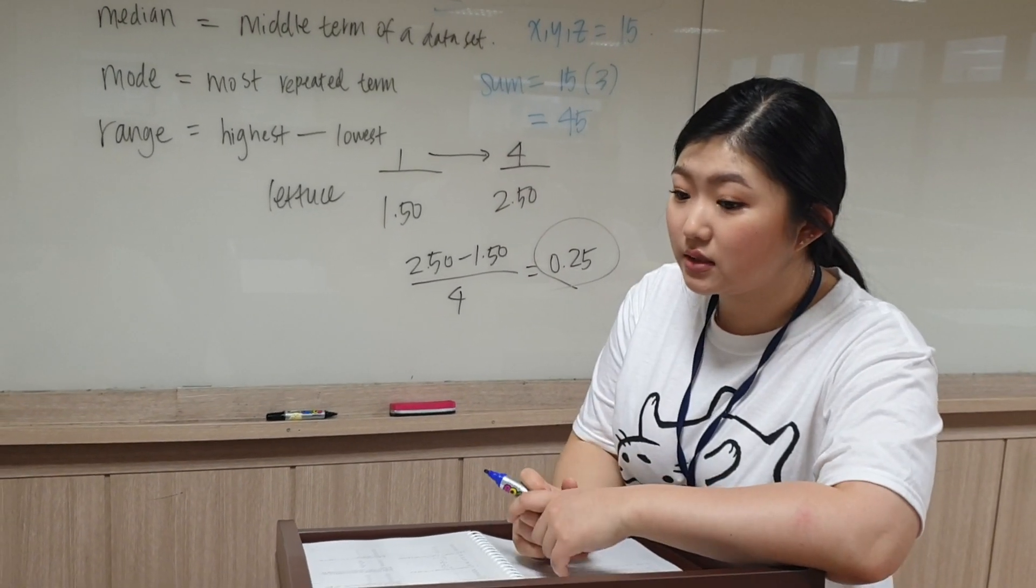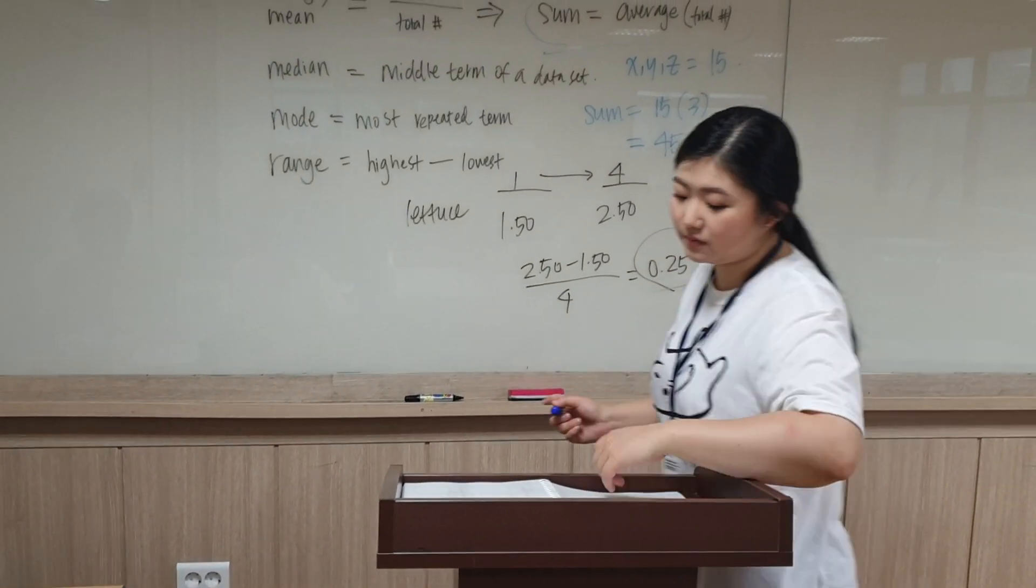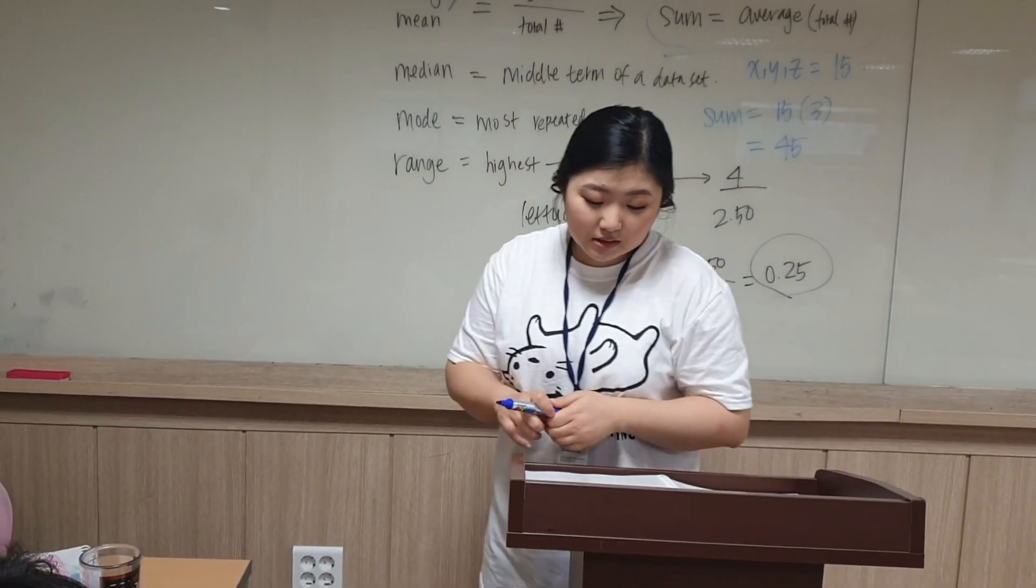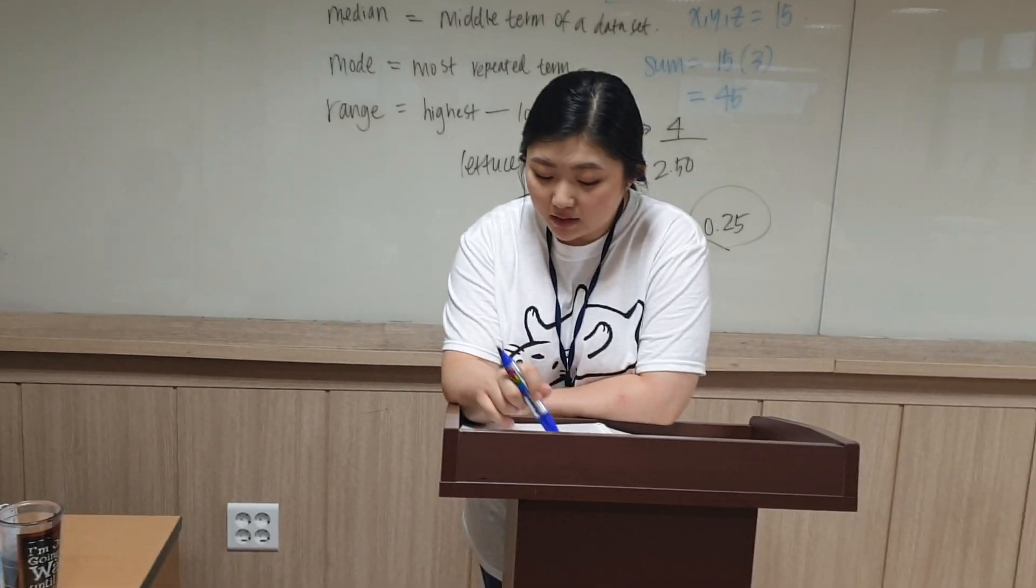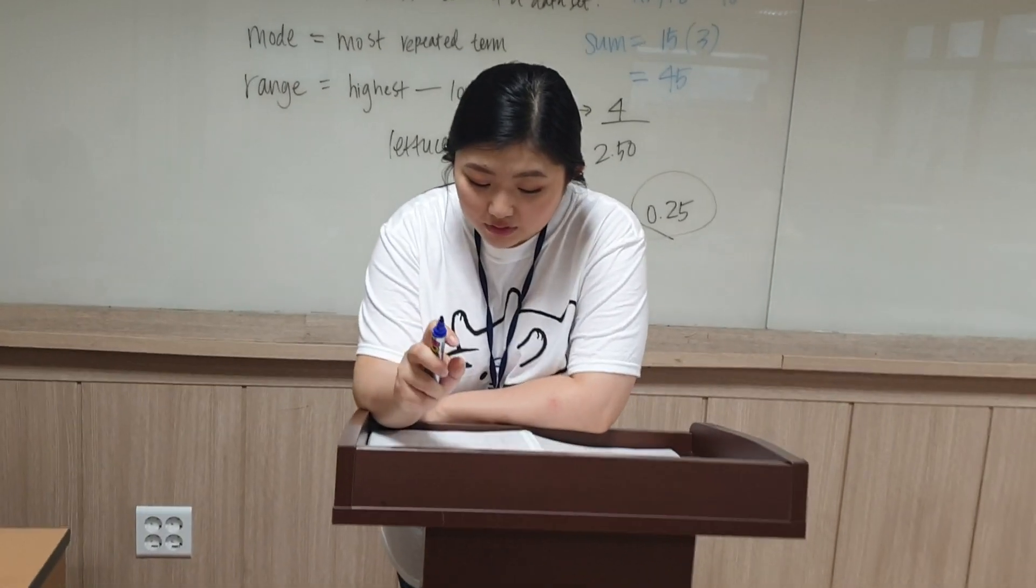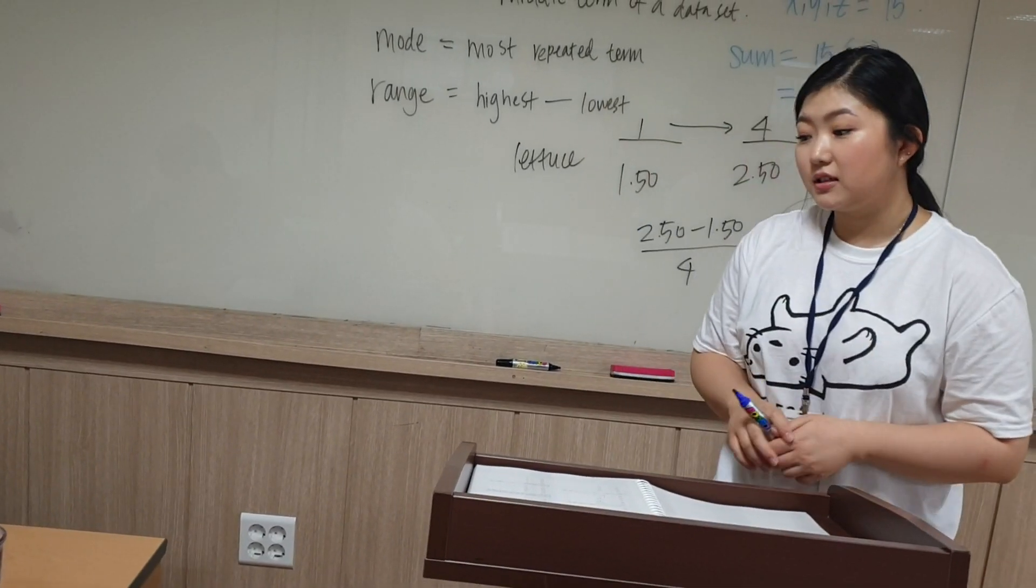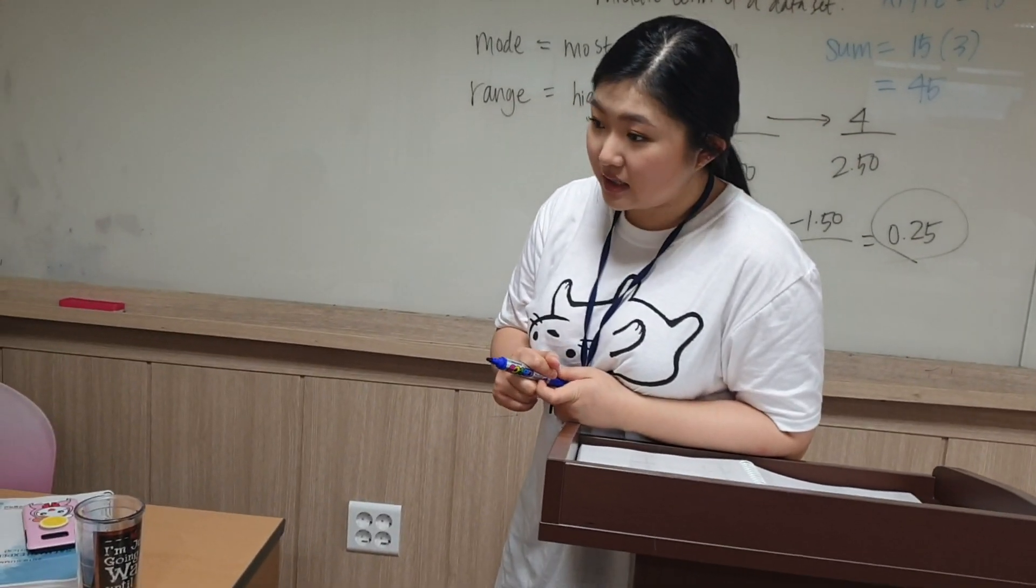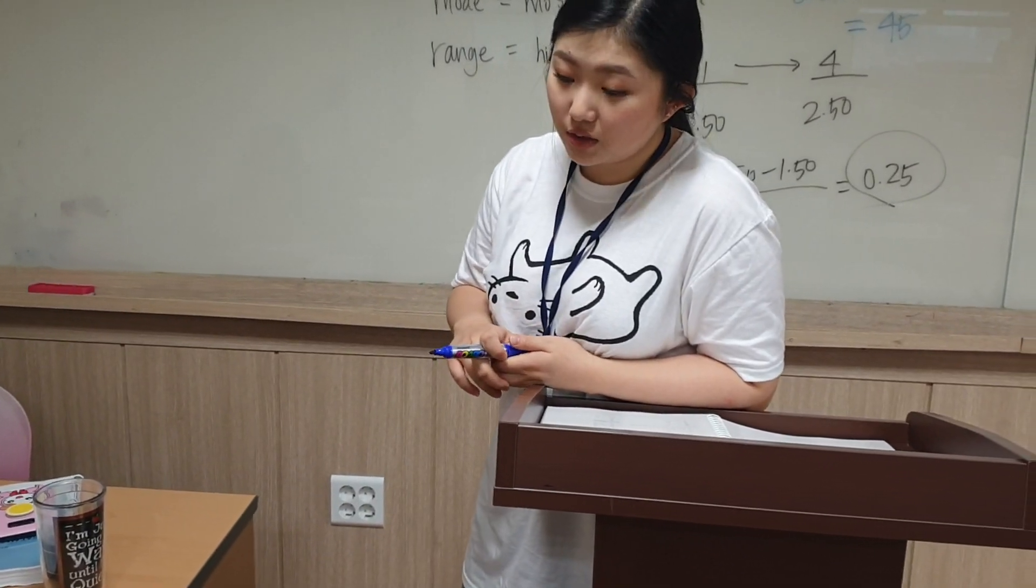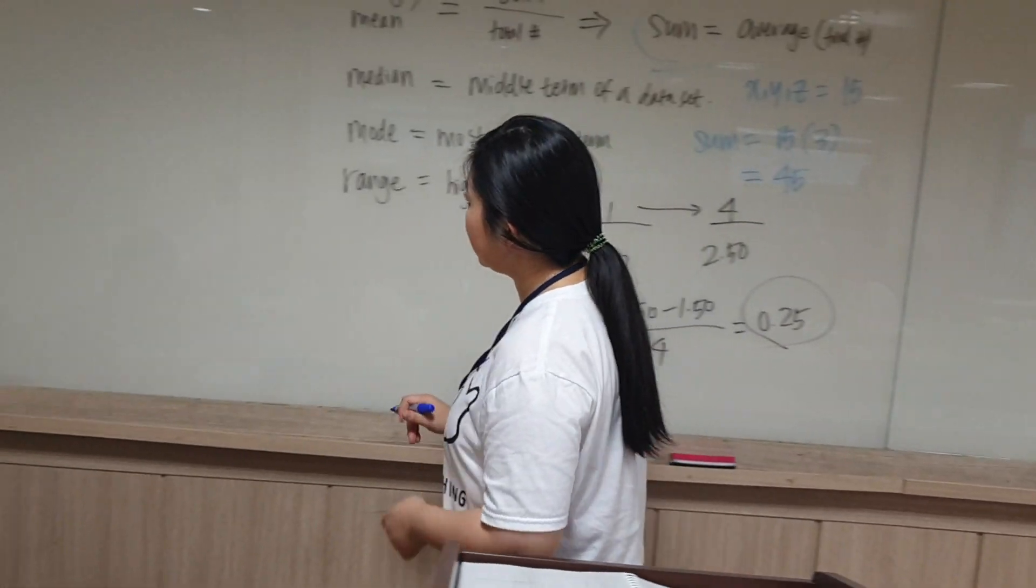And then number two is another type of question, very similar to that. If the average of x and y is 11, and the average of x, y, and z is 5, then what is the value of z? This is another problem where students go, 'Well now don't I need to find x and y?' No, you still don't need to know what x and y are. Because let's see, we'll do it over here.